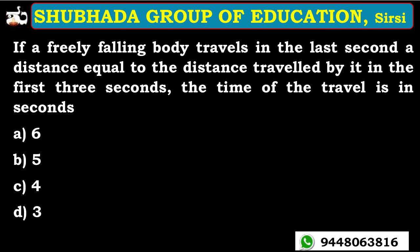The next problem: a freely falling body travels in the last second a distance equal to the distance travelled by it in the first 3 seconds. The time of travel in seconds will be? Let's try to solve this. We have to use the alternate equation of motion: the distance travelled in the nth second equals u plus g divided by 2 into (2n minus 1).